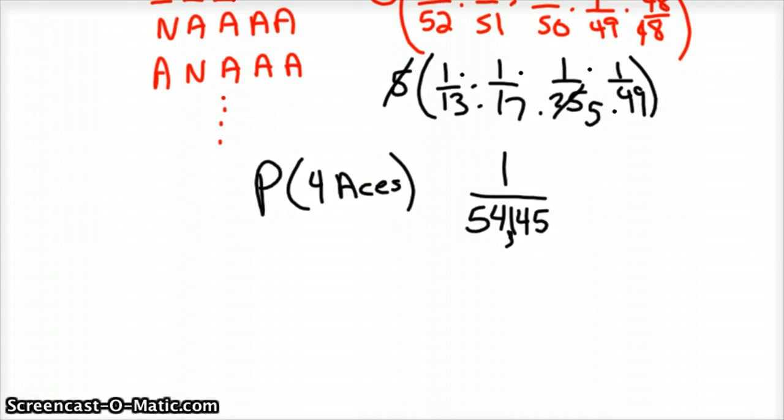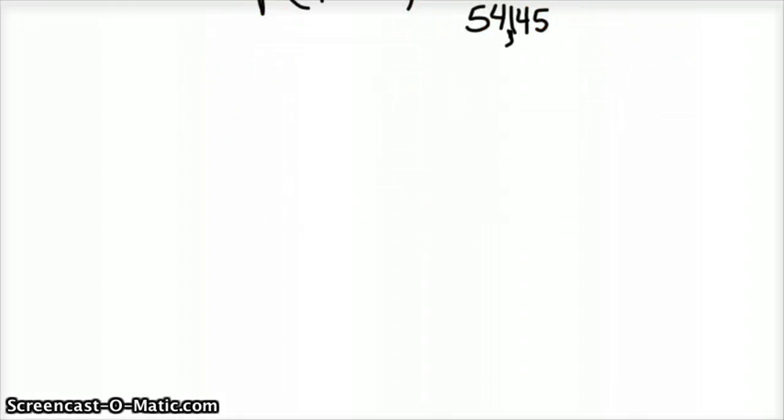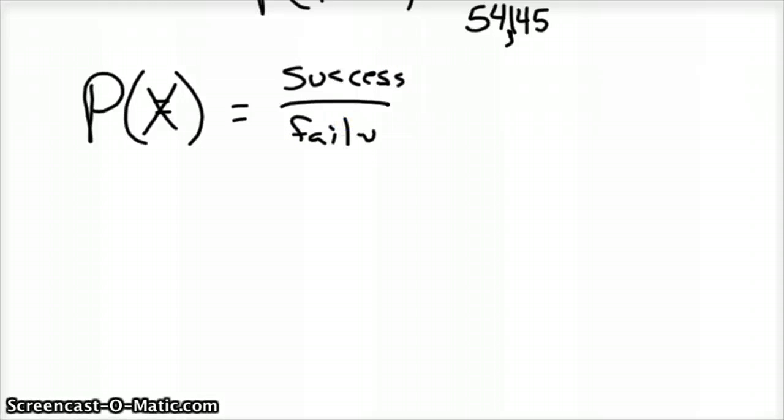So how do we look at this in terms of just the general definition of probability? Well, probability is defined as probability of your event, we'll call it x, is defined as your successes divided by total. So if you can just count each of those, you've got it.